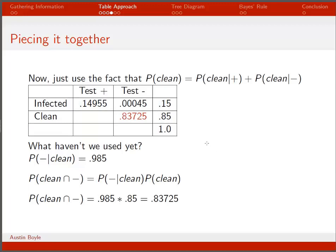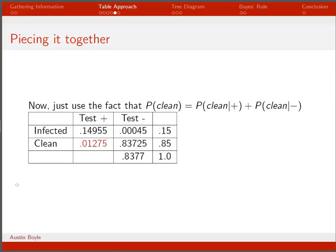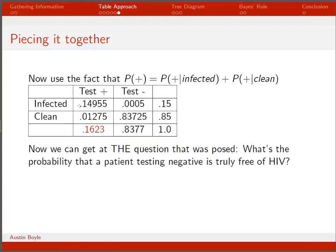We know that the clean-and-negative value plus the clean-and-positive value equals 0.85. We can then add up the relevant numbers to find the probability of a positive test. Notice you can check your work because the total positive probability plus the total negative probability should also equal 1.